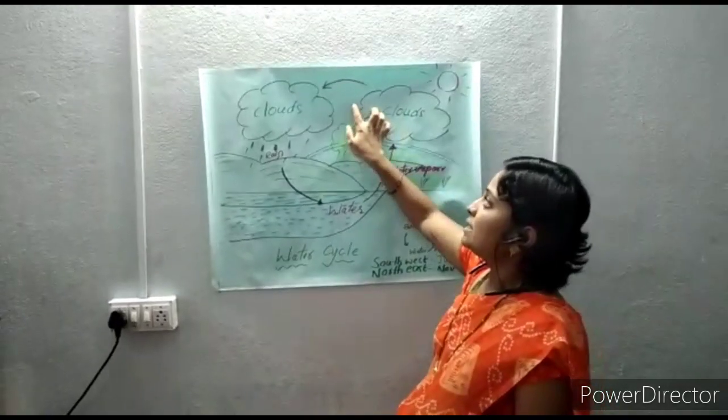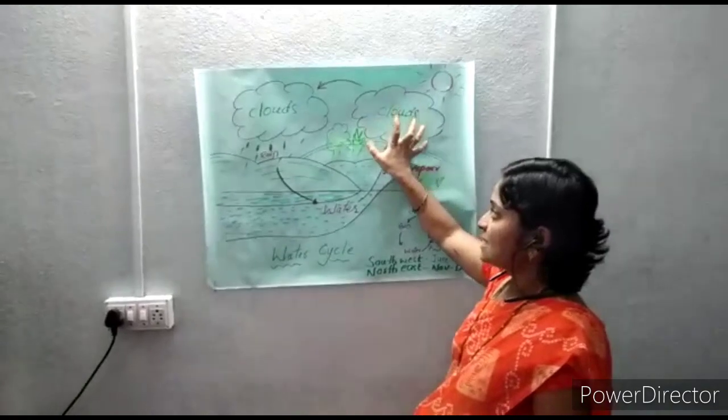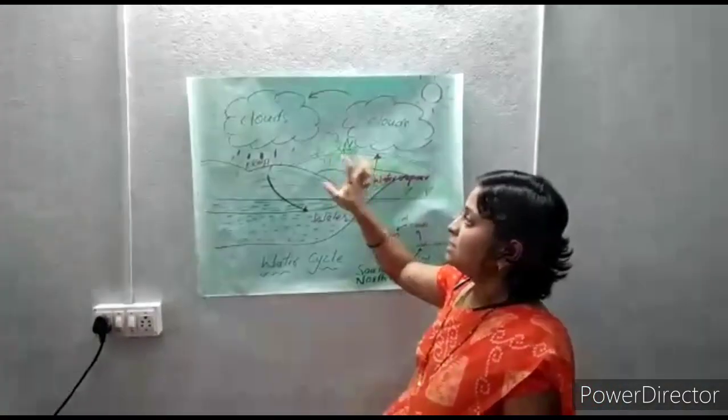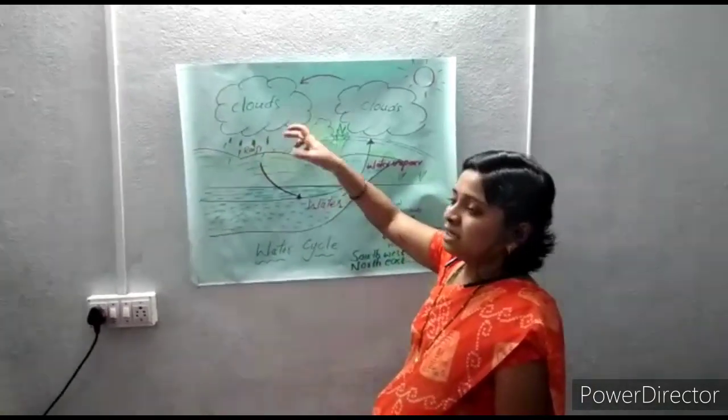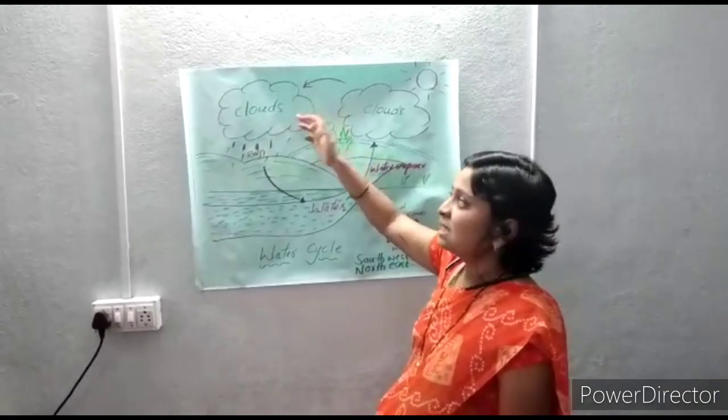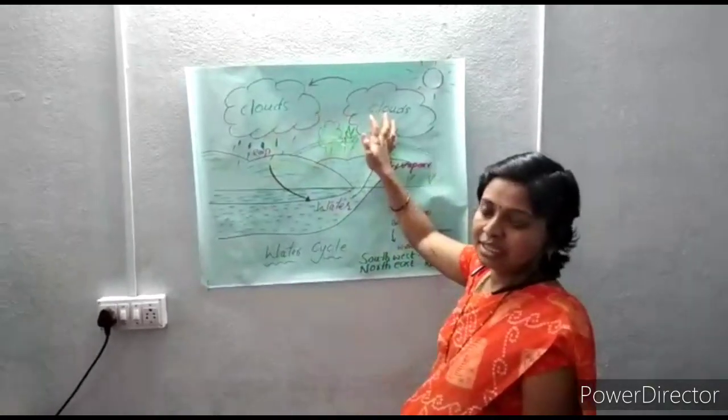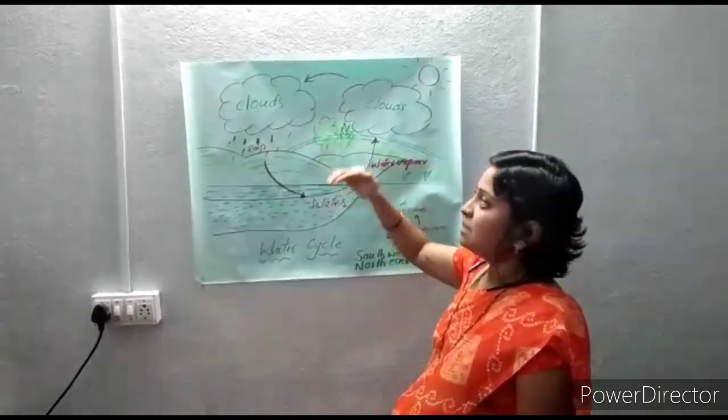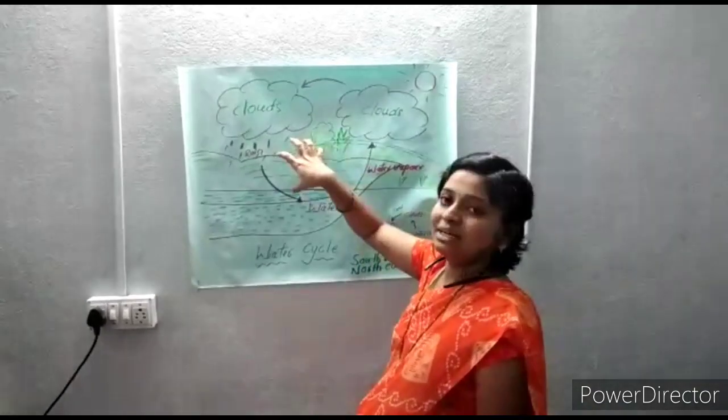Whenever the water droplets change into bigger size, the clouds descend towards the earth's surface. When it becomes cooler and cooler, the clouds cannot hold water inside.